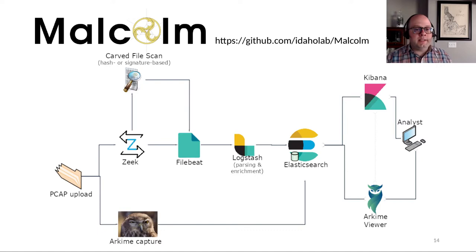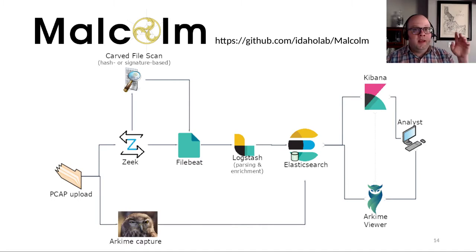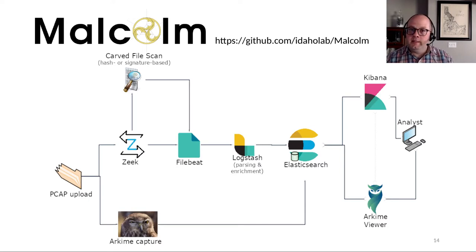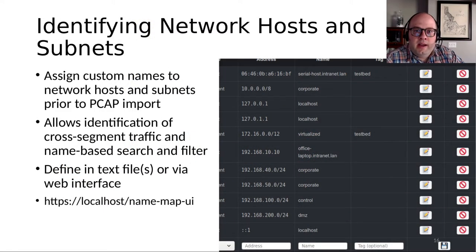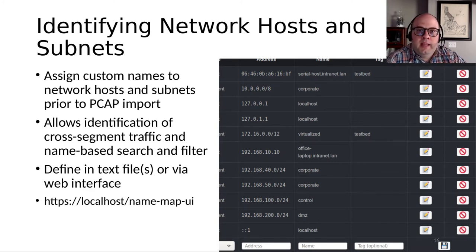Once ingested by Elasticsearch, Malcolm provides two interfaces for visualizing that network traffic: Kibana, primarily for the Zeek logs, and Arkime Viewer, which can be used to visualize the Zeek logs as well as the Arkime session data. Now that we've had an overview of the main components of Malcolm and the theory behind what they do, let's get into the process of actually doing network traffic analysis.